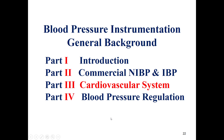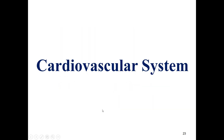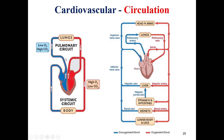Now we will talk about the cardiovascular system. The heart has two circuits: the pulmonary circuit, which involves the lungs, and the systemic circuit, which involves the other organs of the body. The cardiovascular system can be separated into a left side and a right side. The right side has low oxygen concentration and high CO2, whereas the left side has high oxygen concentration and low CO2.